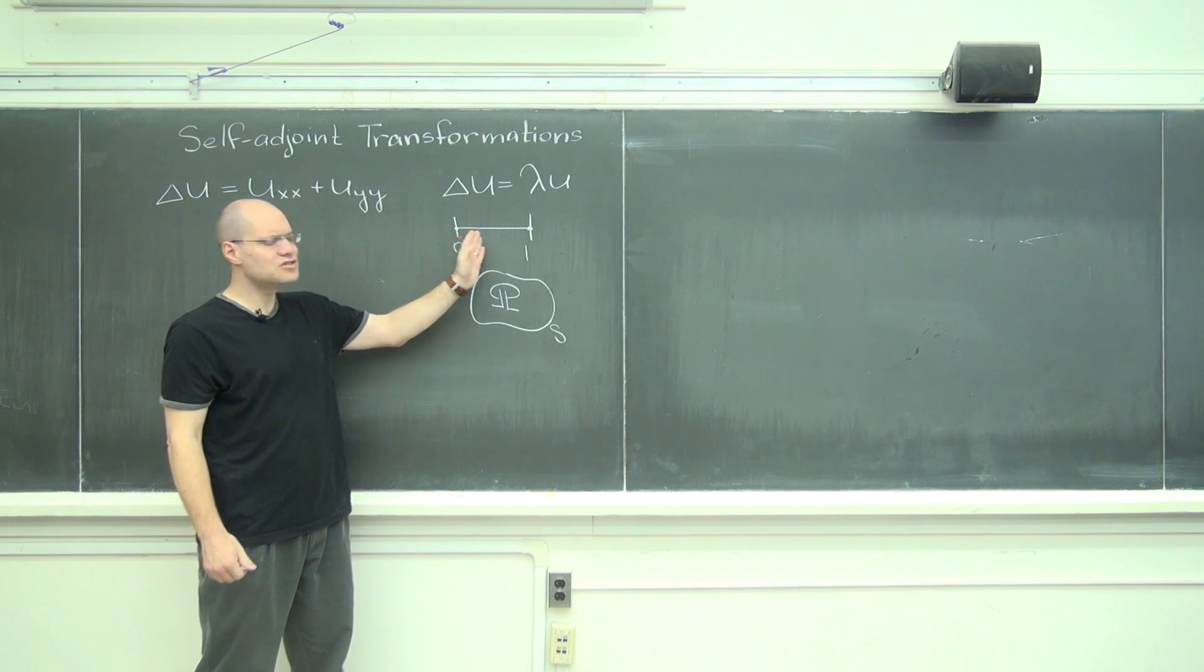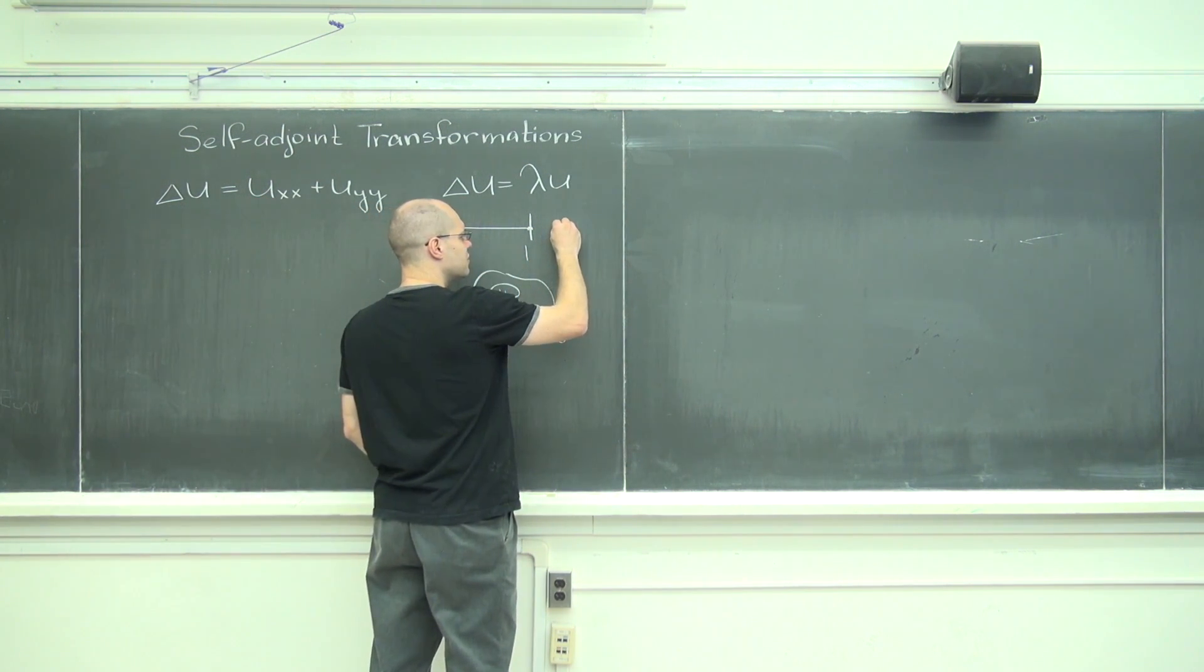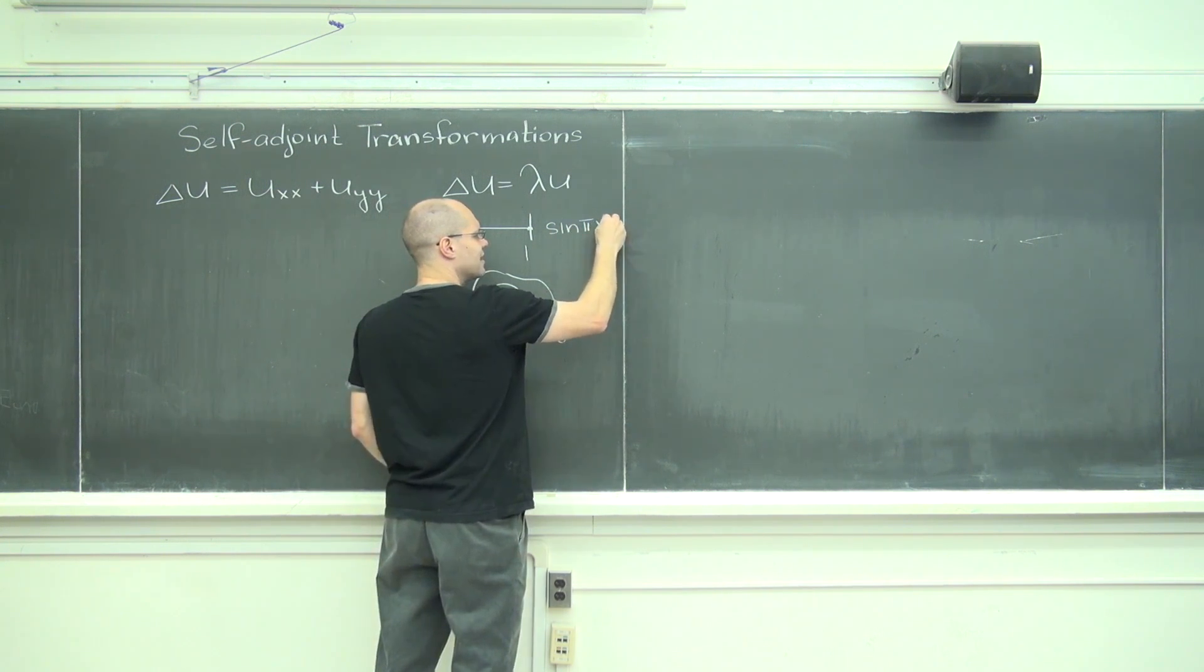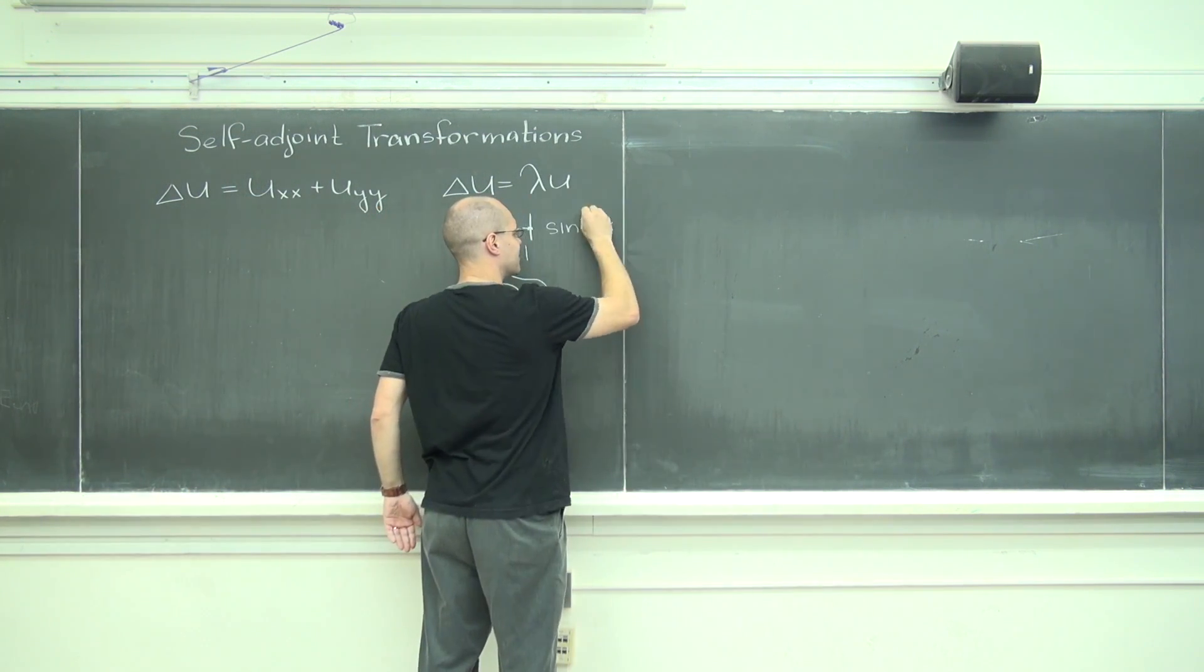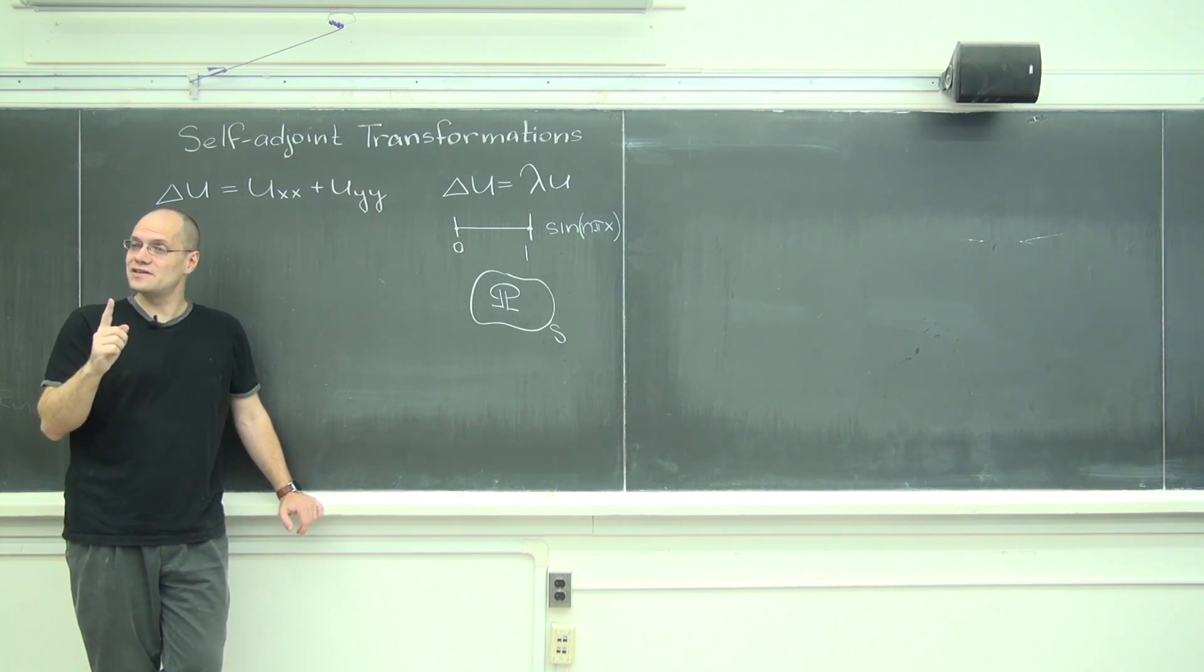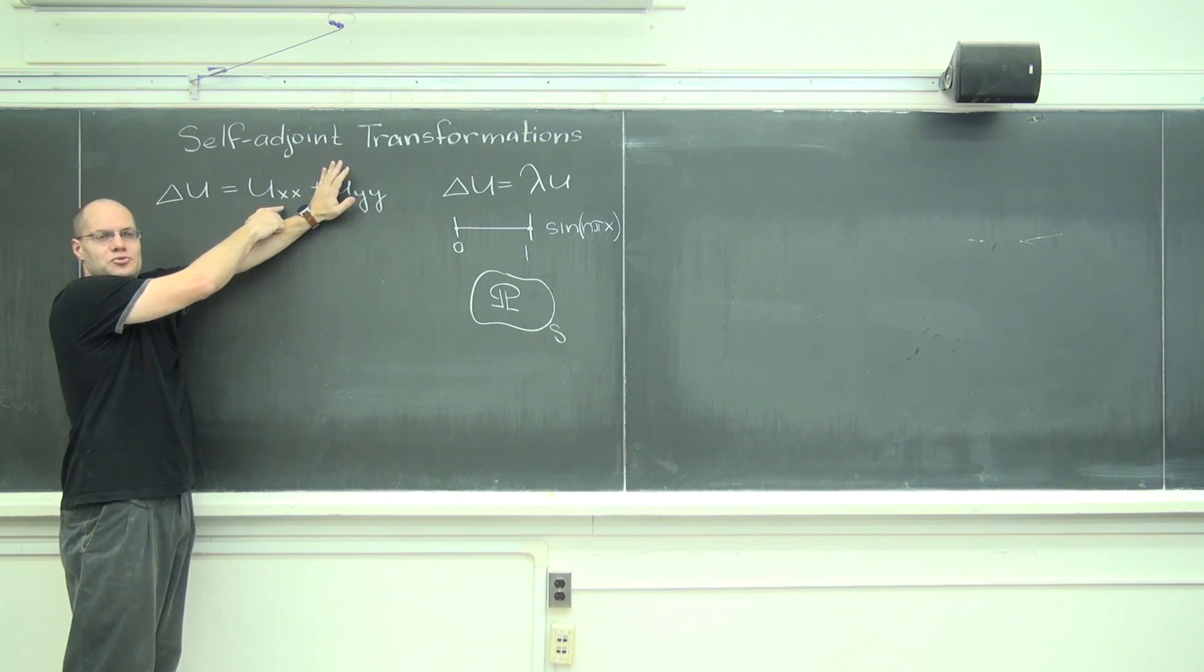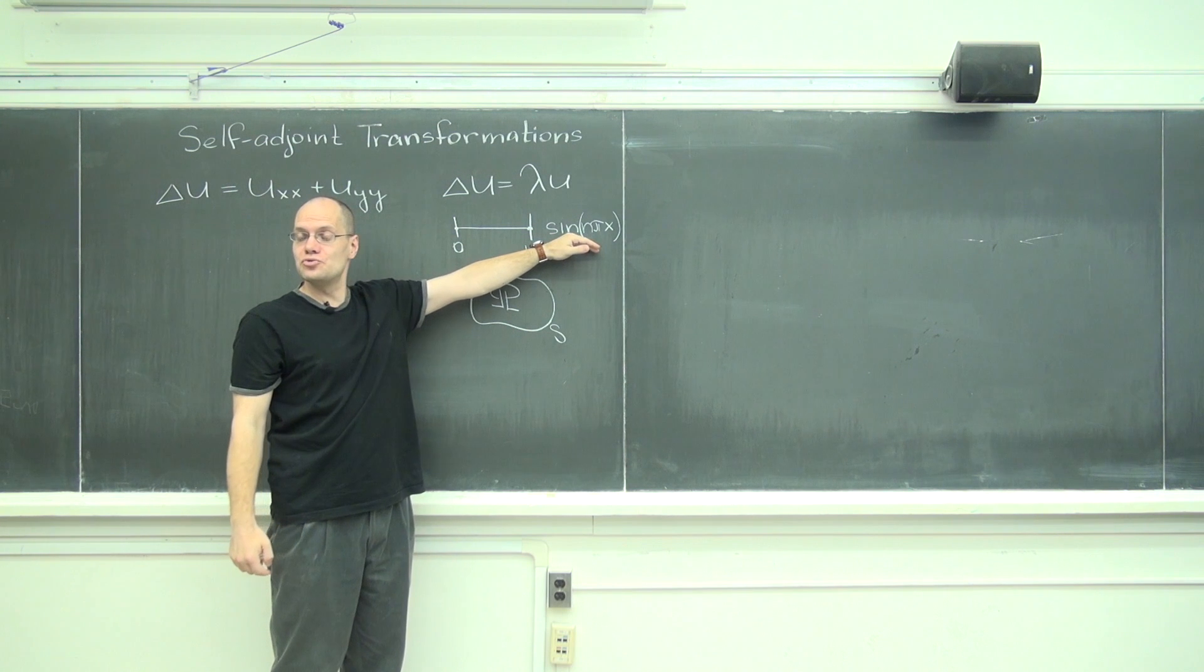And if we think just about this one right here, we'll discover that they all have the form sine of n pi x. Do you guys see that these are the eigenvalues of the Laplace operator? The Laplace operator in one dimension is just the second derivative. Let's make sure of that. Take two derivatives of this function and you will get a multiple of that function back.